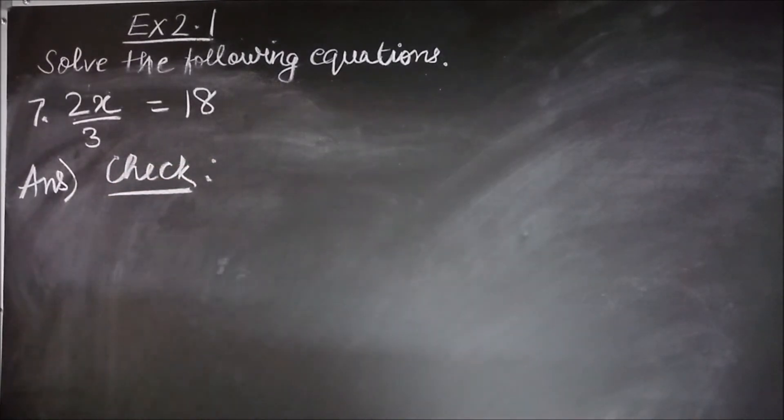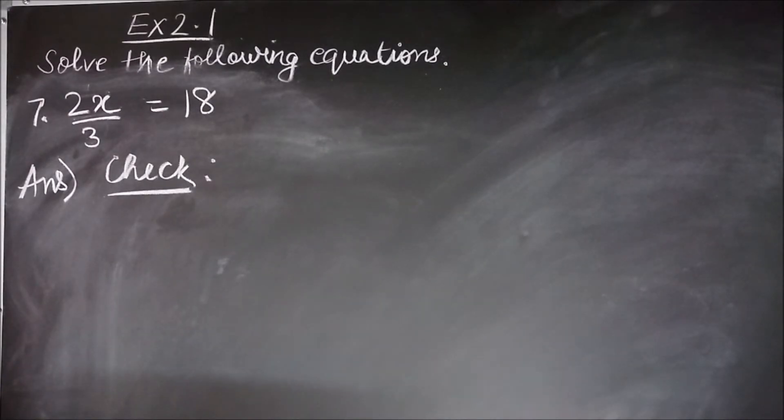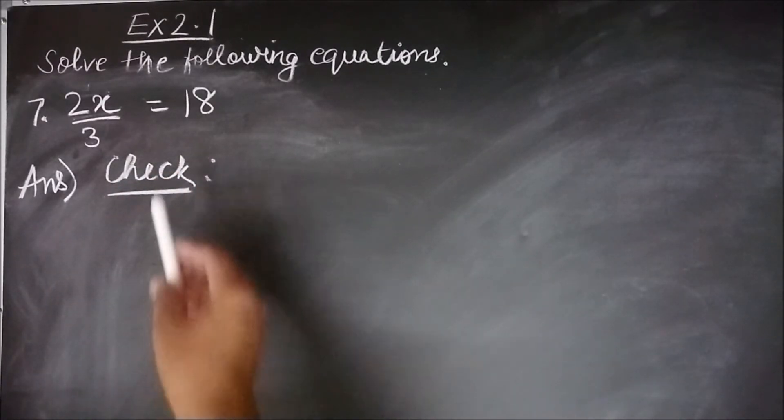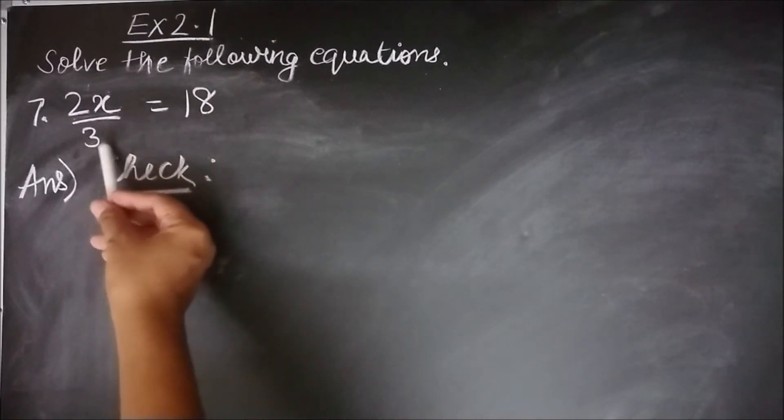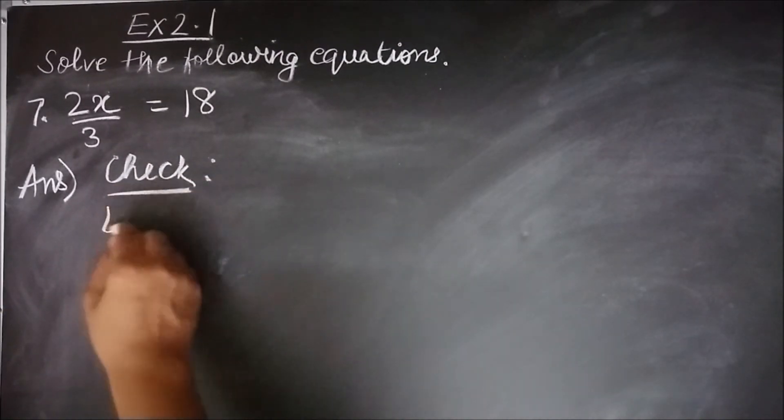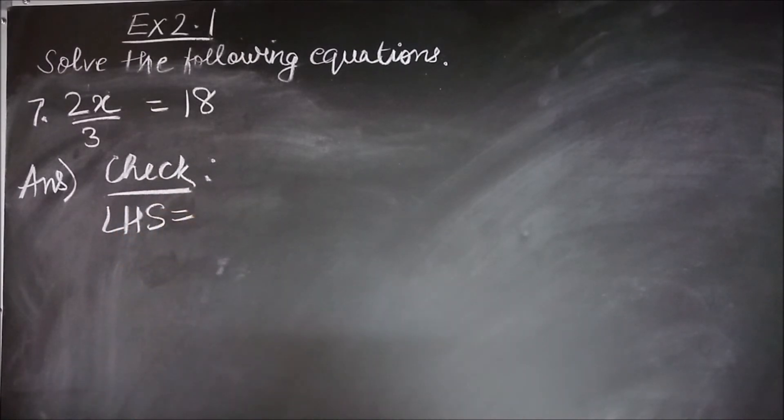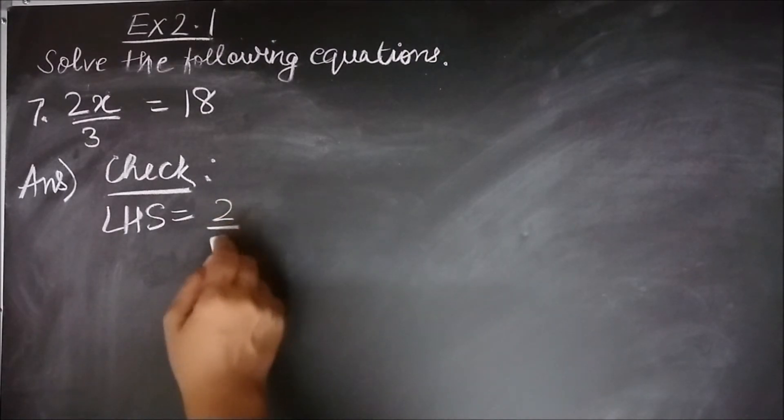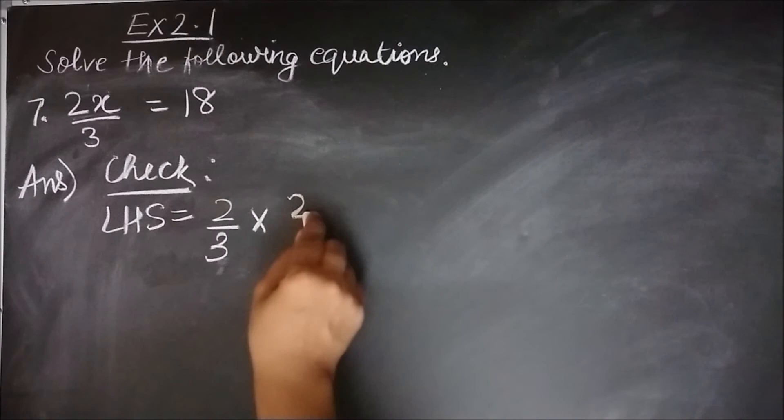To check the correctness of our solution, we need to substitute the value of x that we found as our solution in our equation and see if my balance is still maintained. That is, my left hand side is equal to my right hand side. So my variable is on the left hand side. I will substitute the value of x that I found. 2 by 3 into 27.